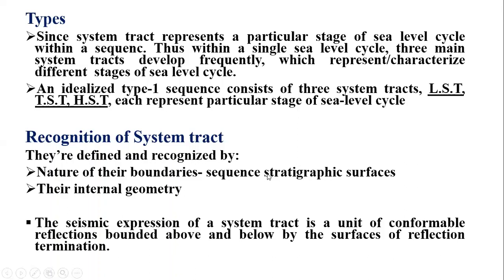How do we recognize and classify system tracks? They are defined and recognized by the nature of their boundaries — by boundaries, we mean their sequence stratigraphic surfaces — and by their internal geometry. They are recognized by the inclusion of the sequence stratigraphic surfaces that bound the system track.